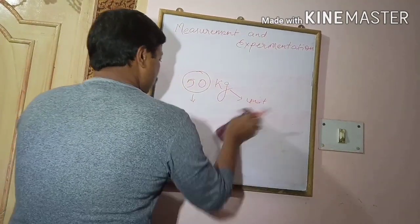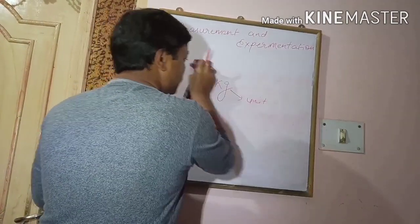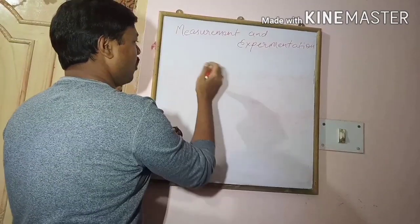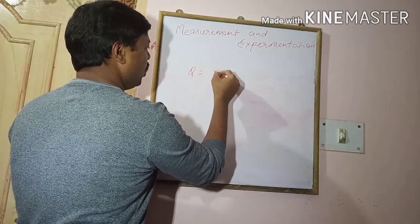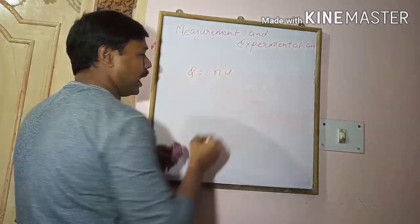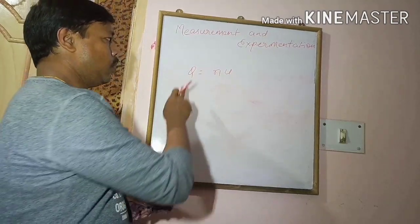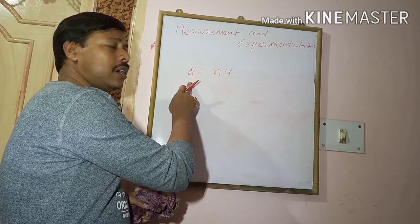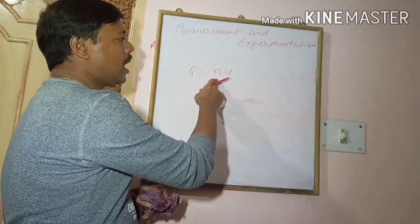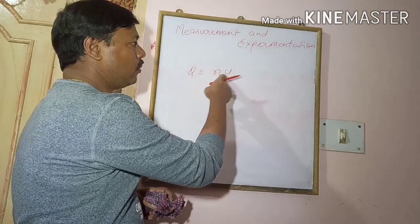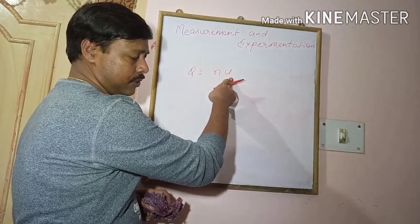We can represent it with a formula: q equals n into u, where q is the physical quantity, n is the numerical value, and u is the unit.